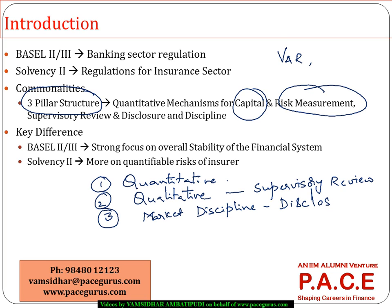The third pillar is more about market discipline and disclosures, which also is more or less in line for both mechanisms. But of course, in some areas there exist some differences between these two frameworks, and that is what we are going to look at now.